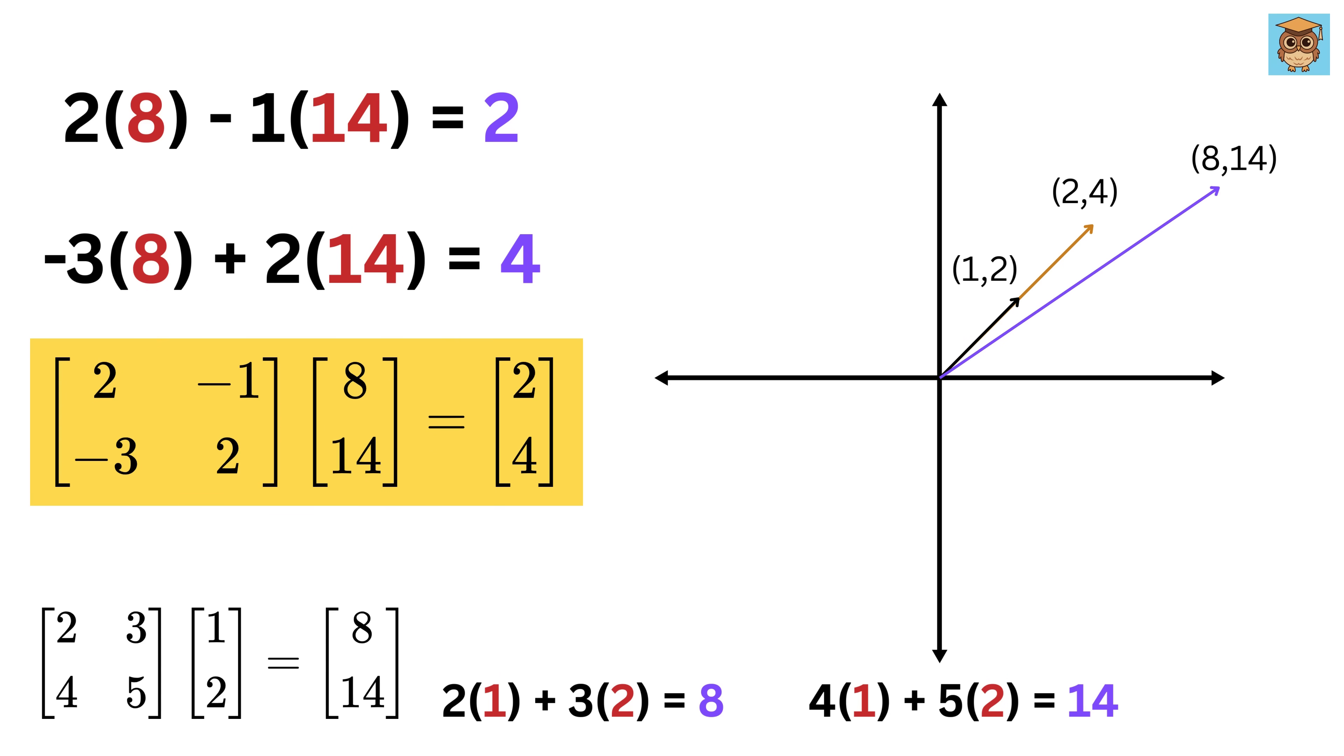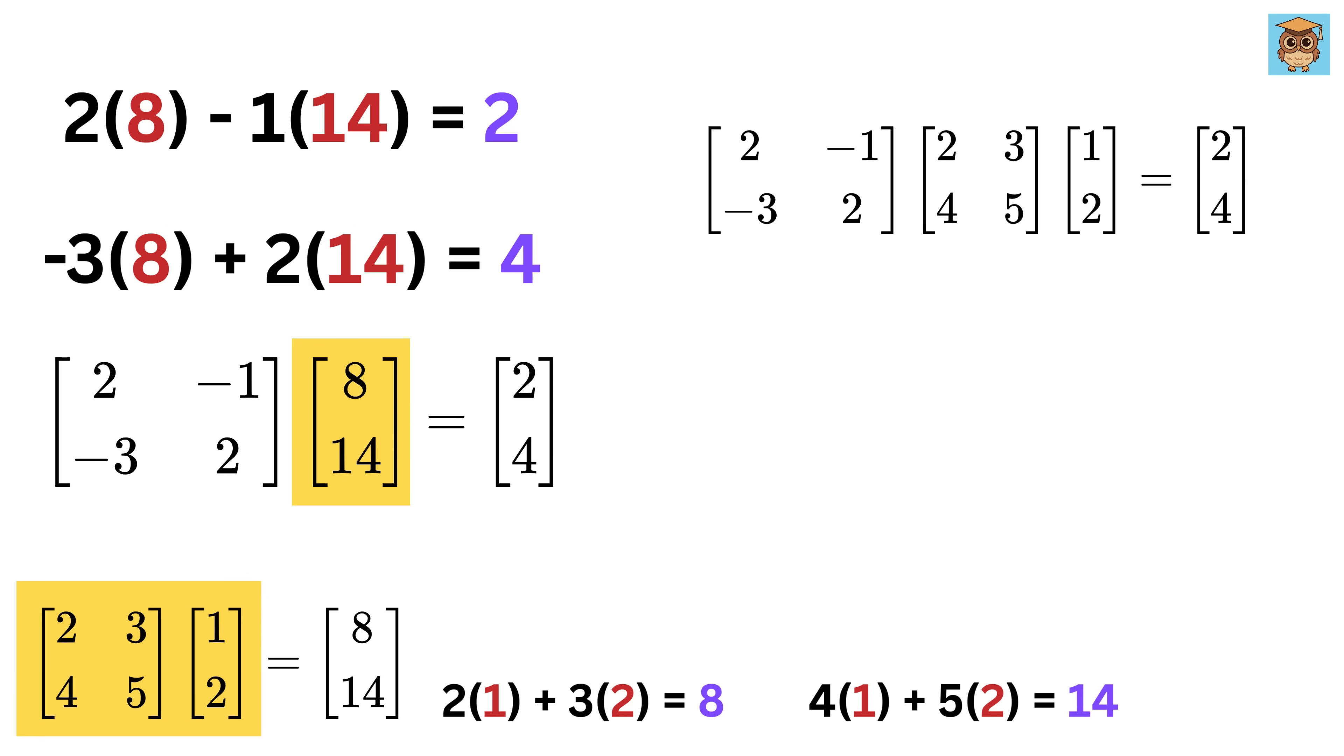But instead of doing these transformations one at a time, what if we could combine both transformations into a single step? That would mean finding one single matrix that directly transforms 1 and 2 into 2 and 4, skipping the middle step. So, in this matrix form, substitute this vector 8 and 14 as this multiplication of matrix and a vector to get this. This way, you can see that we can multiply these two matrices together to create a new matrix that does the entire transformation in just one step.